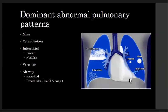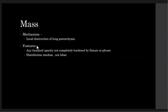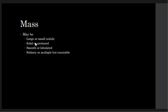Atelectasis is not a pattern but it mimics consolidation — obstructive atelectasis. The mechanism of the mass is a local destruction of the lung parenchyma. Features of the mass: any localized opacity, not completely bordered by fissure or pleural surface, distribution can be random and non-global. The mass can be large or small, solid or cavitated, smooth or lobulated, and solitary or multiple, regardless of size, contour, or location.